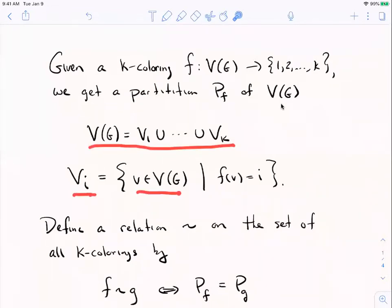You write the vertex set as a disjoint union of sets of V_i, where what's V_i? It's those vertices in G that have color i. So that's how a coloring gives rise to a partition. If color 1 is red, V_1 is all the red vertices, V_2 is all the blue vertices, and so on.